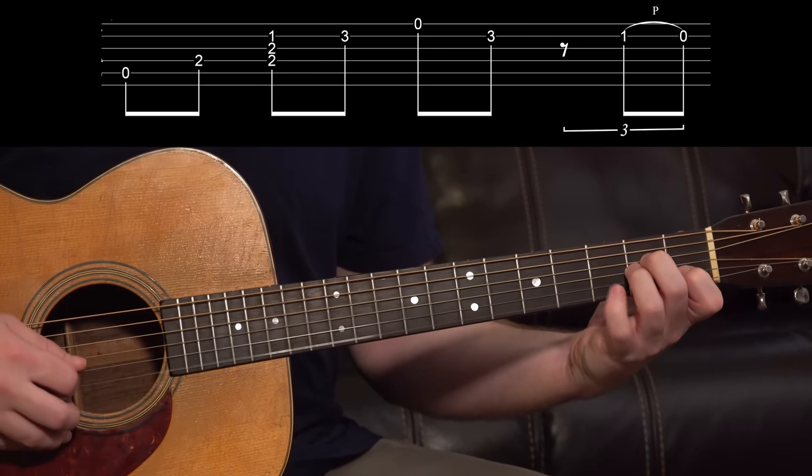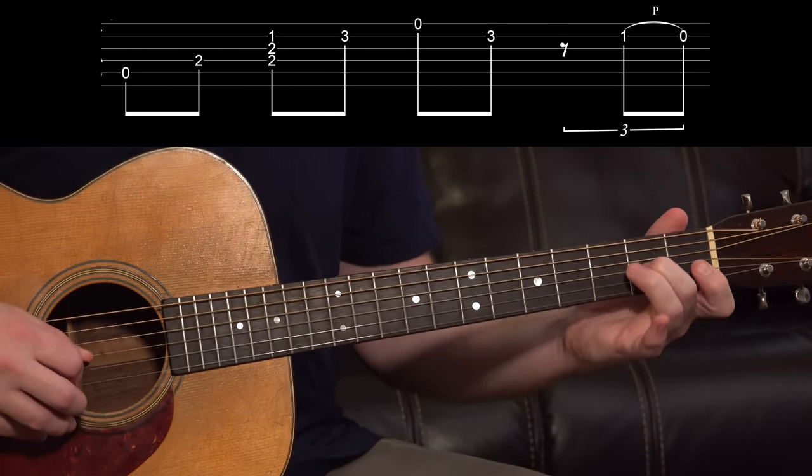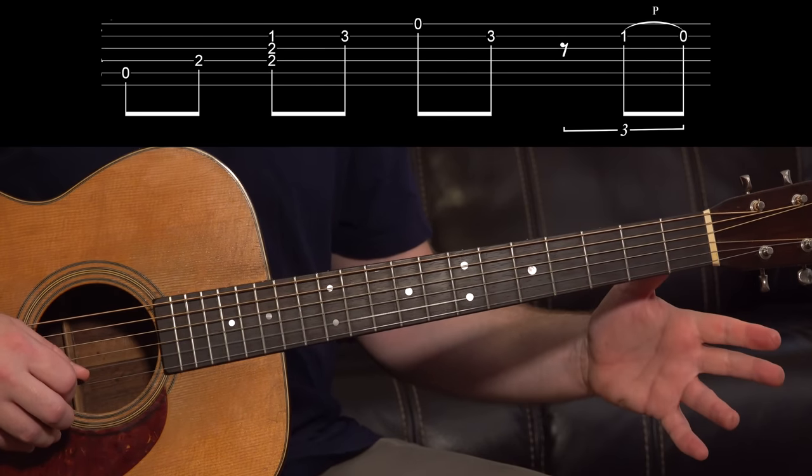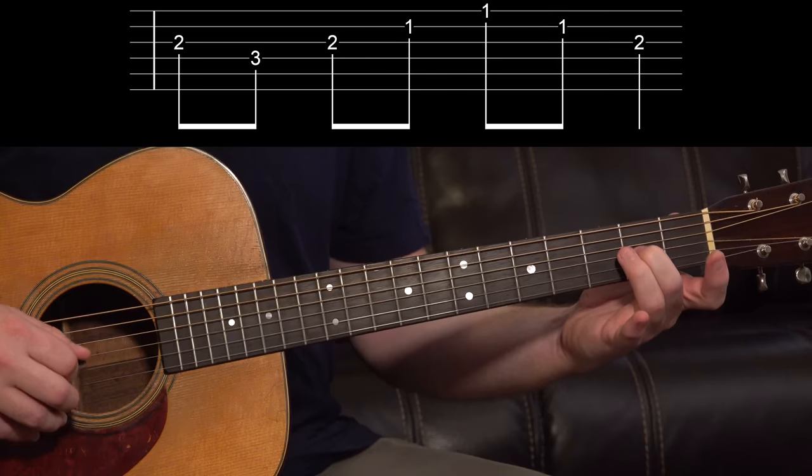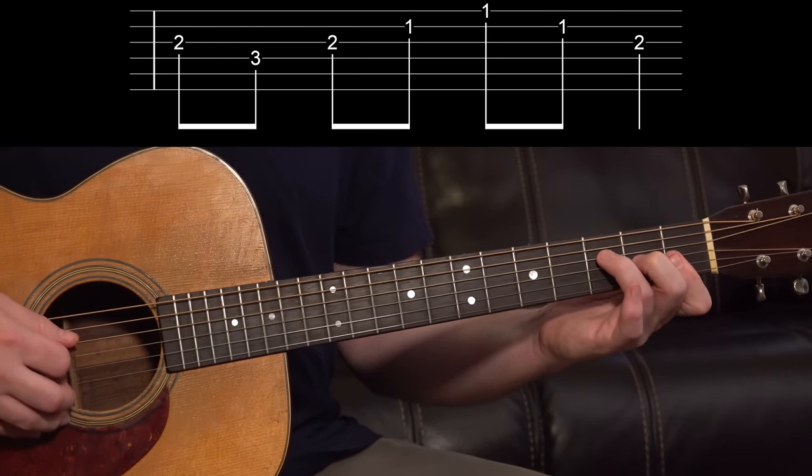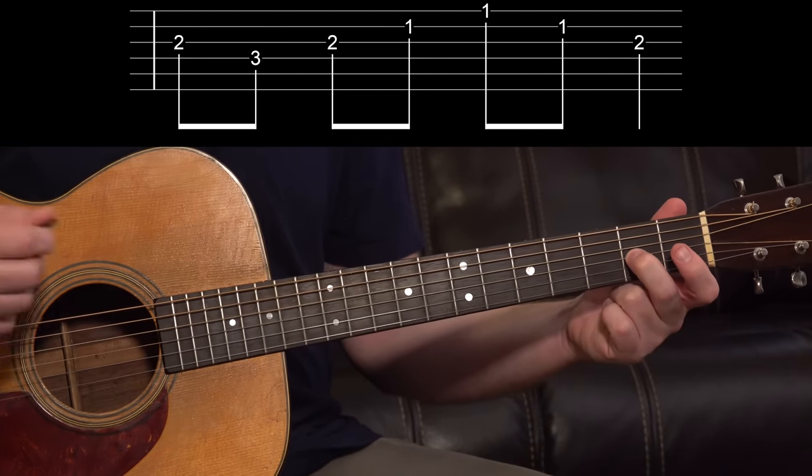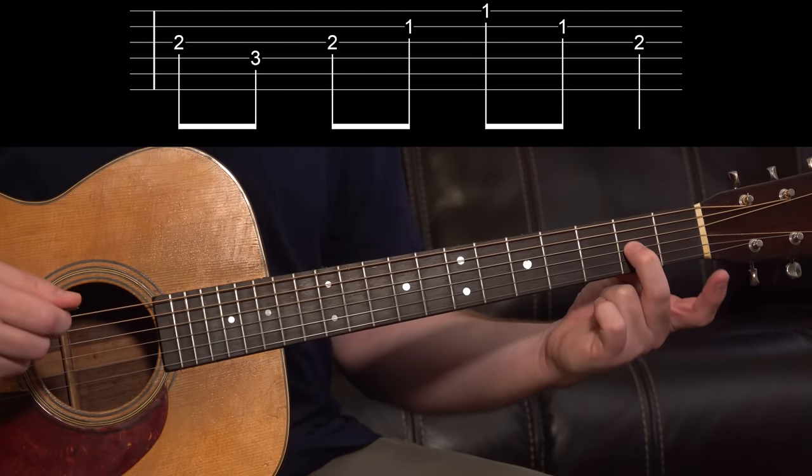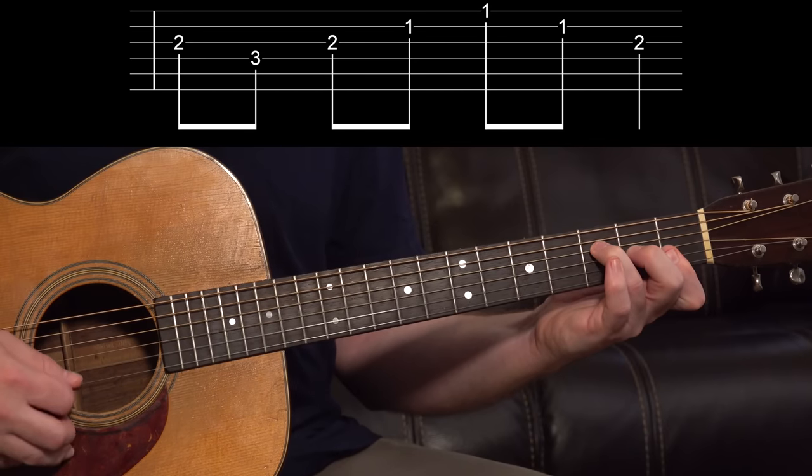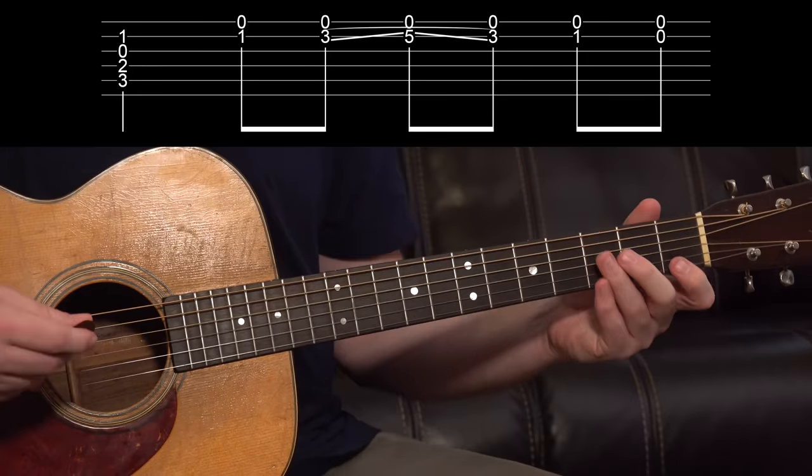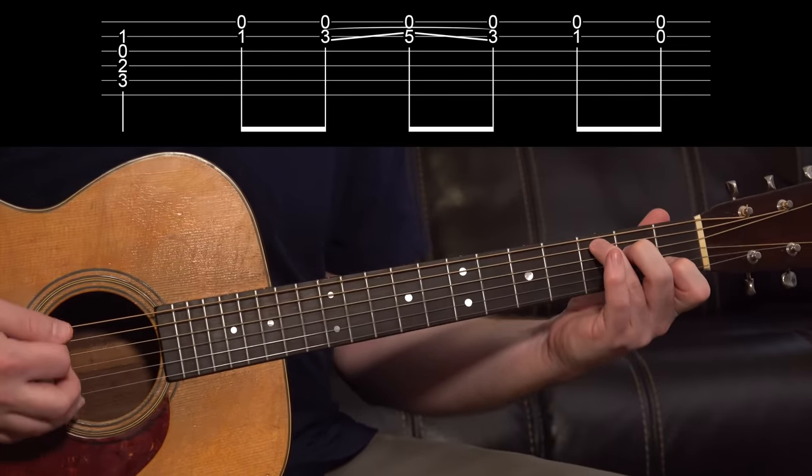And then we come back to the third fret second string and I held it a little bit. And then that's a pull-off - that's the first fret. We play it, pull it off, come back to the second fret third string. So make sure when you play that second fret third string that you're playing it with your middle finger, so that your other fingers can fall into place to play the F chord.